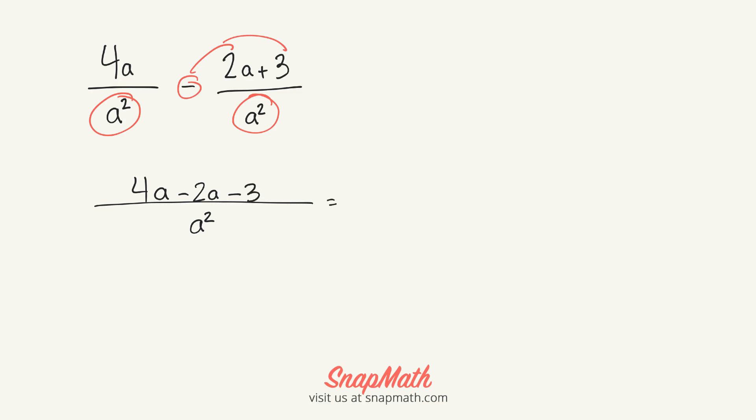And then we collect like terms. So 4a minus 2a is 2a minus 3 over a². And then there's nothing we can reduce, so that is your answer. Thanks for sending your question to SnapMath, and have a great day.